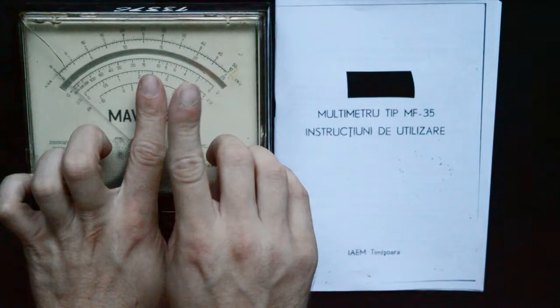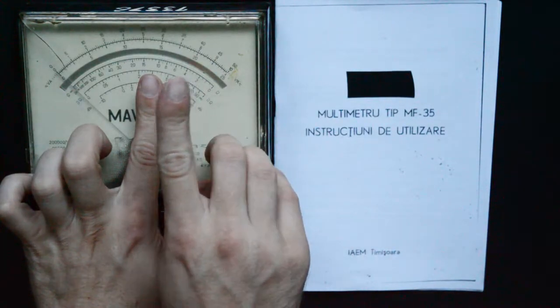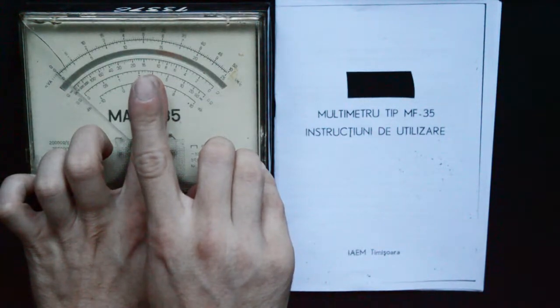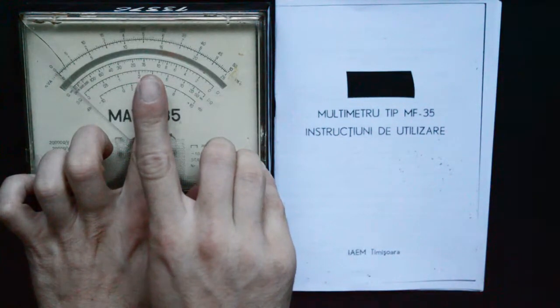Only when looking at a perpendicular angle do the two lines overlap, and you see the correct value on the multimeter.